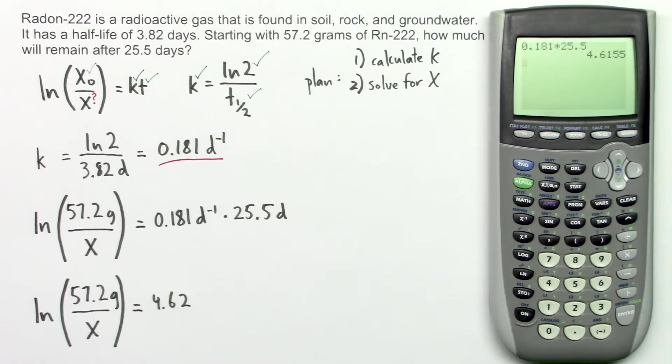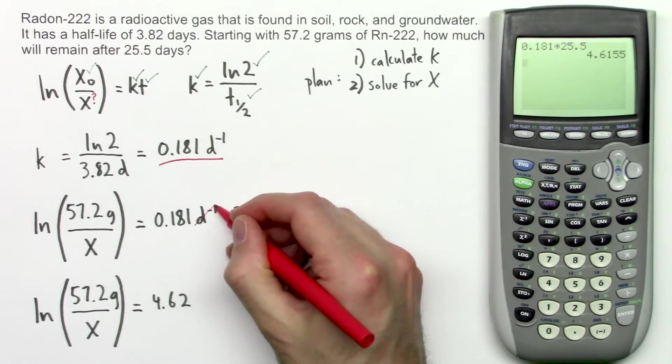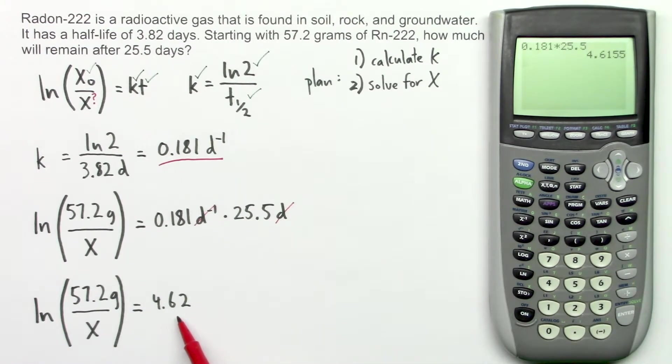What are the units here? Well, we have days here and inverse days here. This is the same as having days on the numerator, and days in the denominator, which means the days cancel and this value doesn't have any units associated with it.